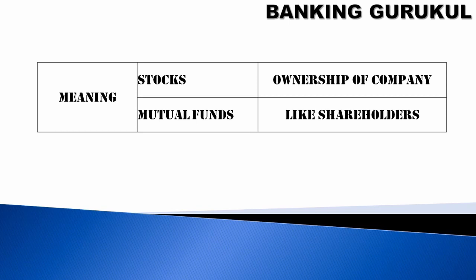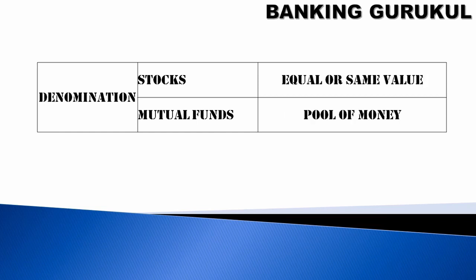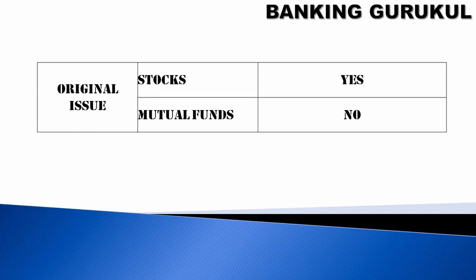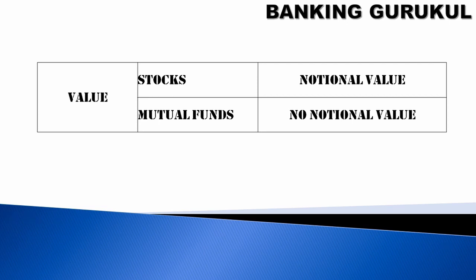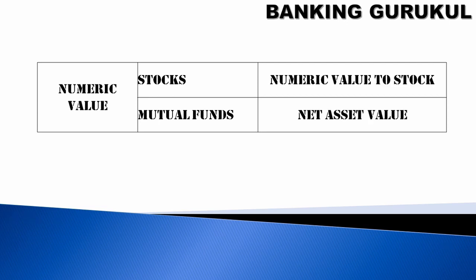Now let's look at the differences. In terms of meaning: stocks represent ownership of a company, while with mutual funds you are not a direct shareholder — you own the company indirectly through the fund. Denomination: stocks have equal or same value; mutual funds are a pool of money. Original issue: stocks yes, mutual funds no. Notional value: stocks have notional value, mutual funds do not. Numeric value: stocks have a numeric stock price; mutual funds have a Net Asset Value.